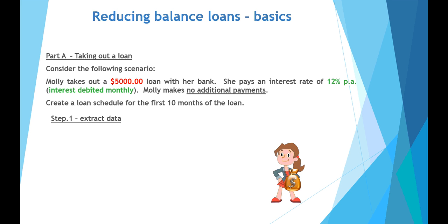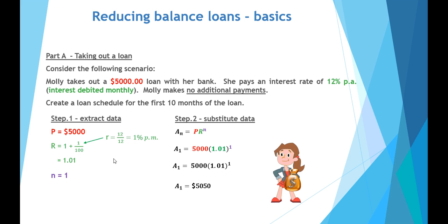In the first month, let's look at this from an annuities approach. The principal is $5,000. The compounding or growth factor is going to be 1.01, because our rate must be in monthly terms. 12% per year divided by 12 months gives 1% per month, so our growth factor is 1.01. The number of months is 1. We find that at the end of the first month, Molly now owes the bank $5,050 — she's increased the amount owing, which makes sense because she's made no additional payments.